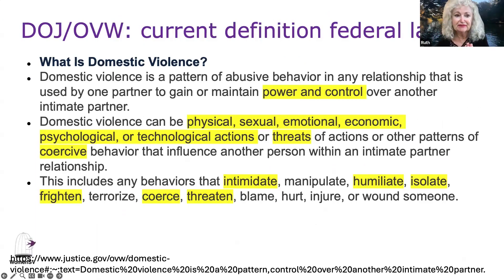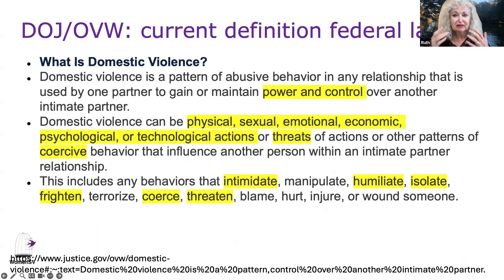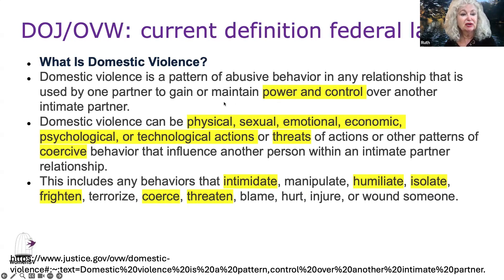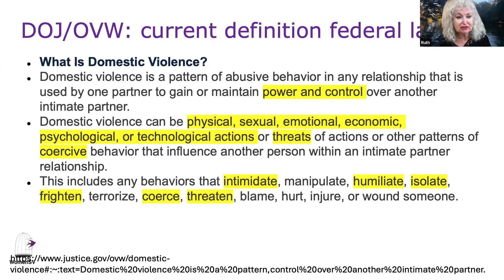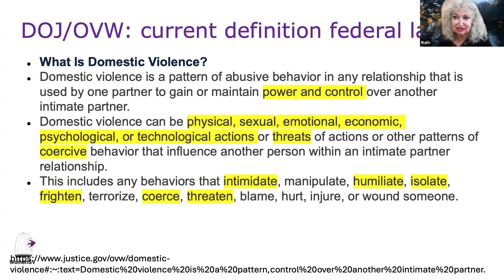Here's the current federal law definition. Regardless of what state you live in, if you look up the Department of Justice federal definition of domestic violence, it's abusive behavior in any relationship used by one partner to gain or maintain power and control over another intimate partner. Domestic violence can be physical, sexual, emotional, financial, psychological, technological, or threats of actions — or other patterns of coercive behavior. The key word is patterns — we want to look at the pattern, not just an isolated act, unless it's something egregious like strangulation, which has happened to over 40% of survivors.